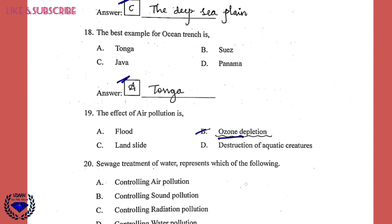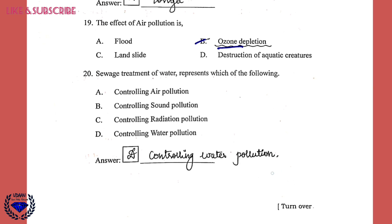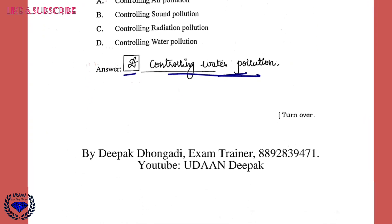Question 20: Sewage treatment of water represents which of the following? The correct answer is D, controlling water pollution, because sewage is related to water. They have already mentioned sewage treatment of water, so it is related to water pollution itself.